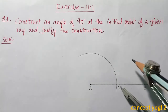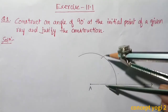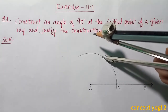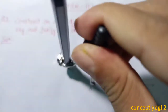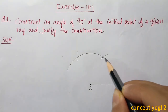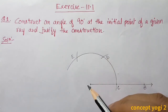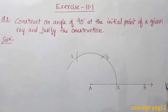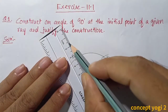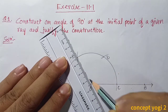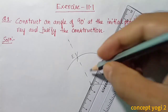Now taking the same radius and keeping the compass at C, we will cut the previous arc. The first cut gives 60 degrees, as we have already learned. We make another cut. Say the points are D and E. If you join A and D we get 60 degrees, and if you join E and A we get 120 degrees.